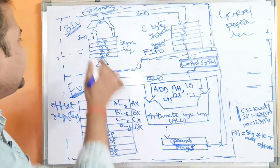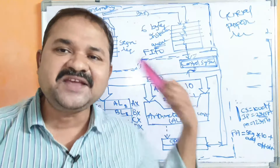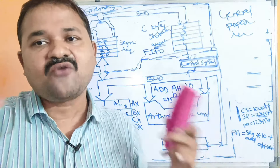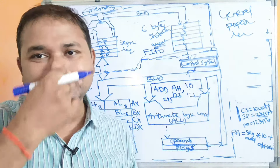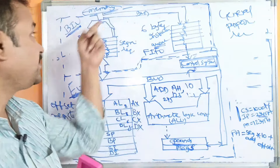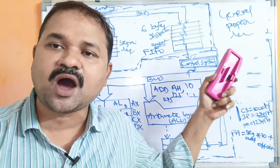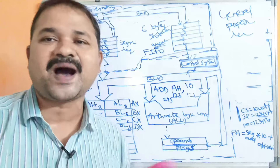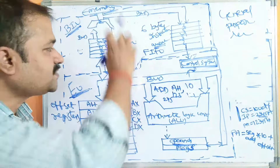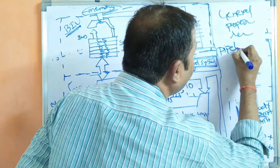The Bus Interface Unit mainly fetches instructions, while the Execution Unit executes them. After execution, the EU passes the result to the BIU, which in turn stores that information in memory. The architecture is divided into two parts in order to implement a concept called pipelining.